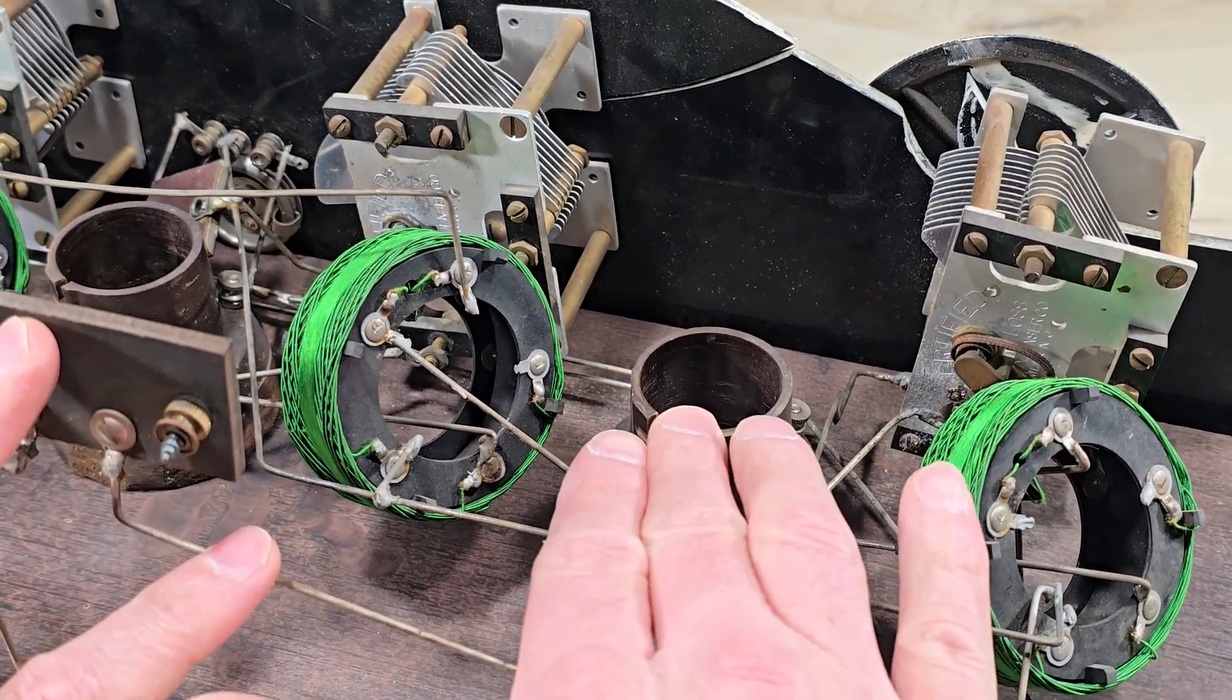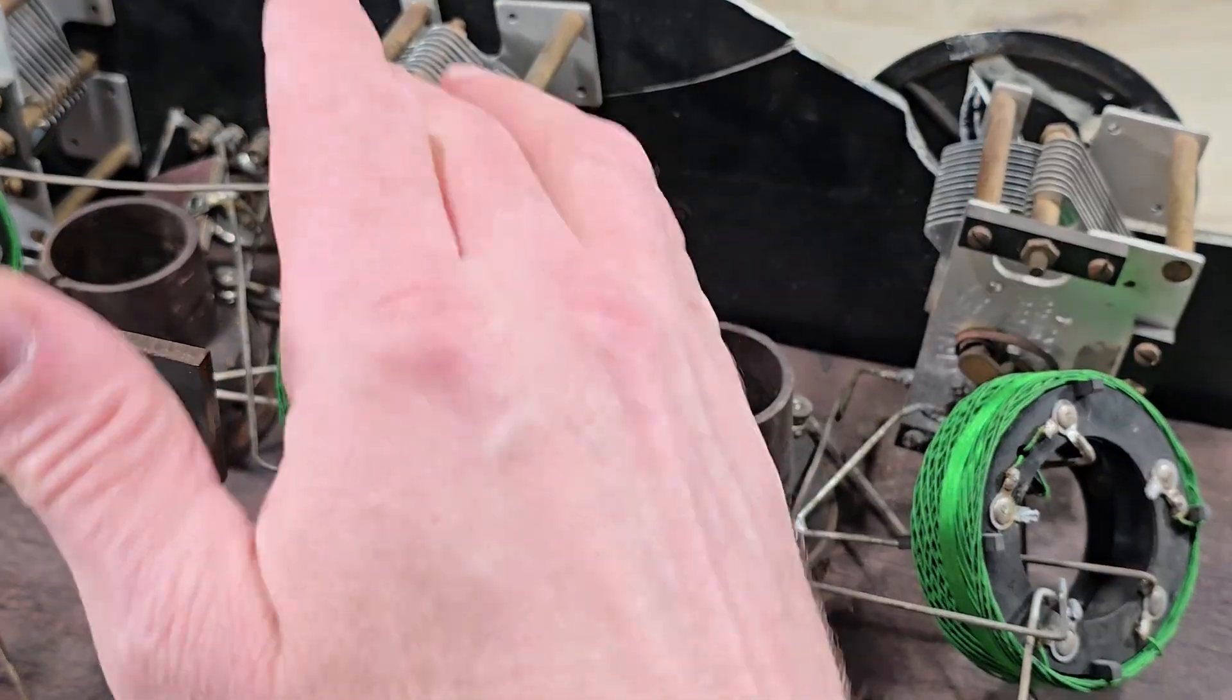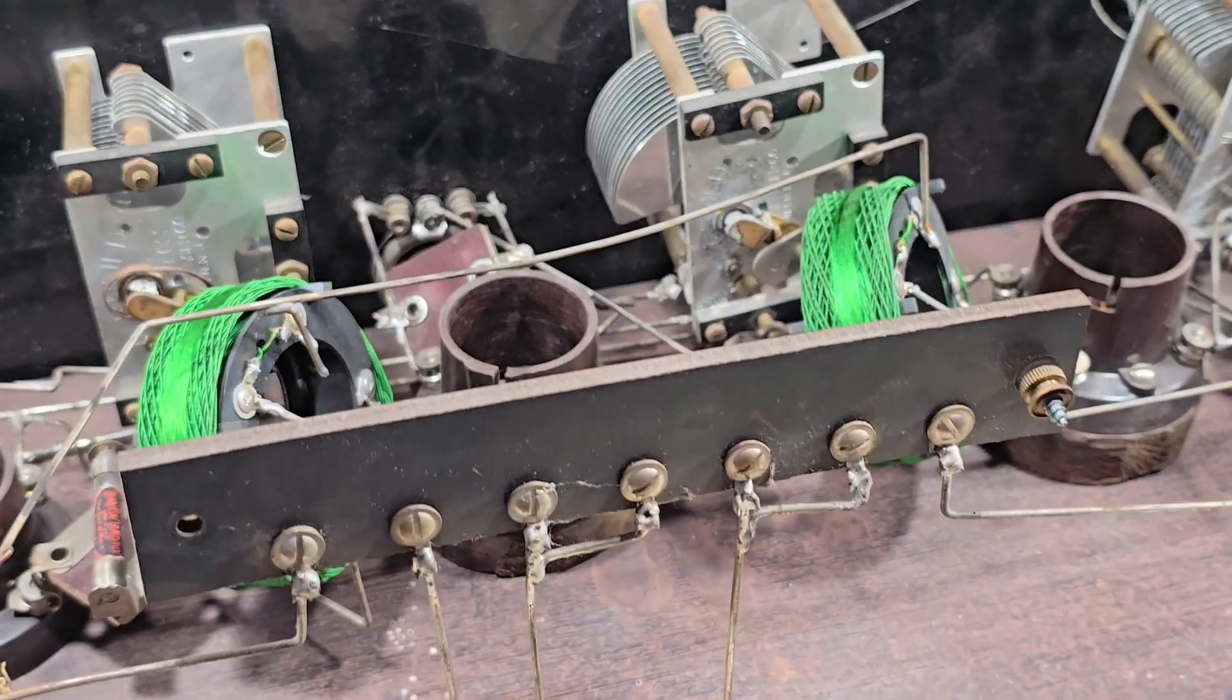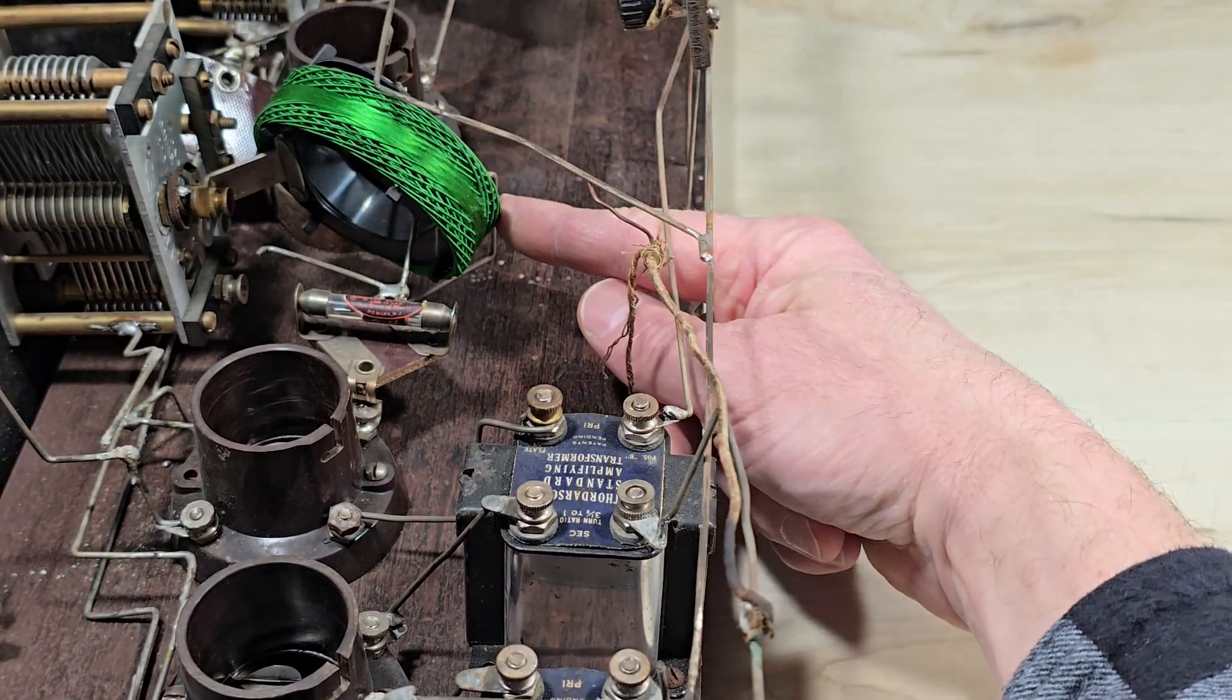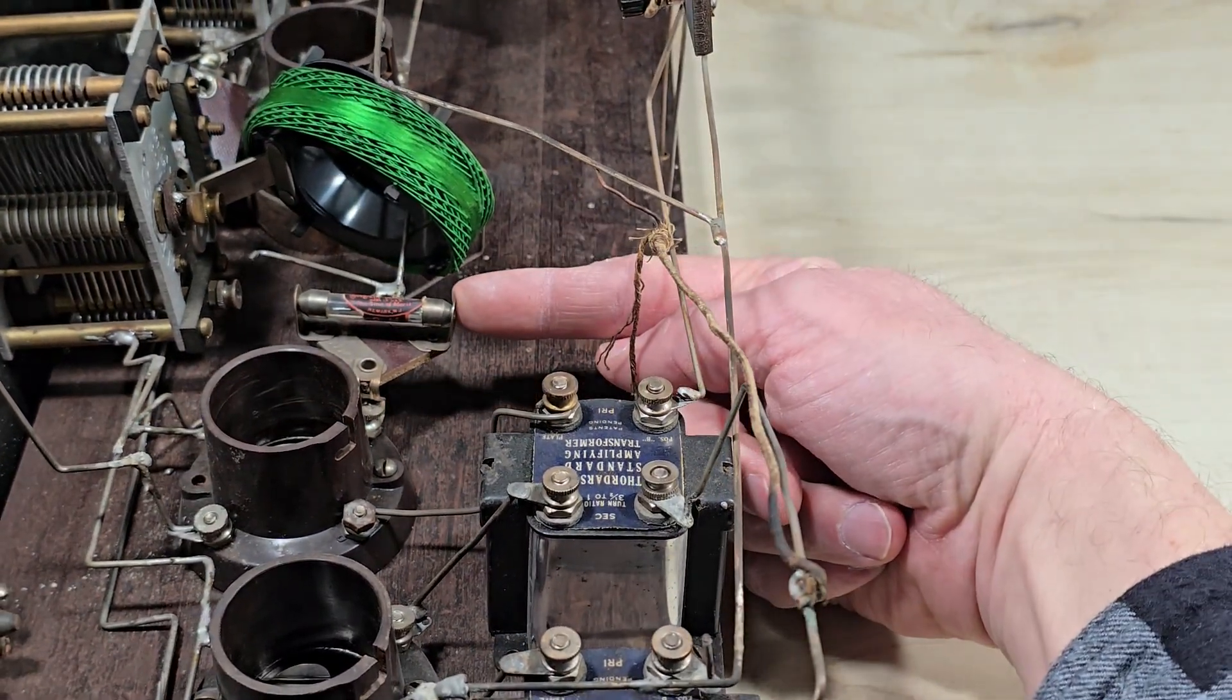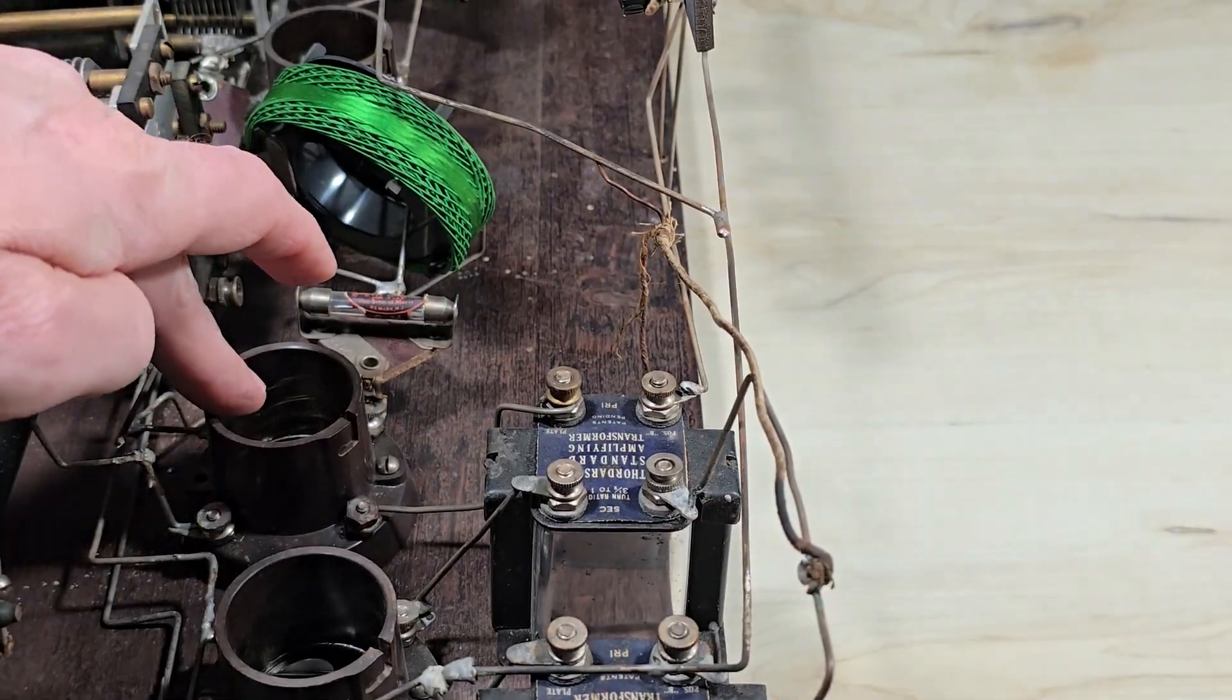This vacuum tube would have sent the signal to this coil, this coil to the next vacuum tube, the next vacuum tube to this coil, to the grid leak resistor, the detector tube.